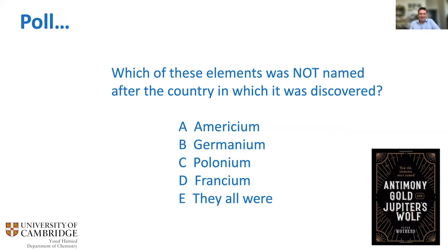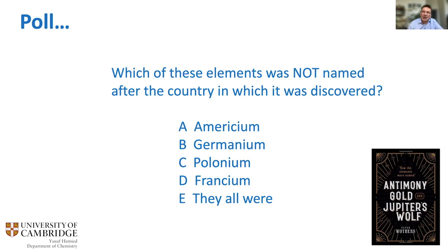The correct answer is polonium. Polonium is named after Poland, but interestingly Poland didn't actually exist when this element was named — discovered by Marie Curie, who was in France at the time. It was a political statement on her part to draw attention to the fact that Poland had been incorporated into an empire, literally naming it to highlight the plight of her country.